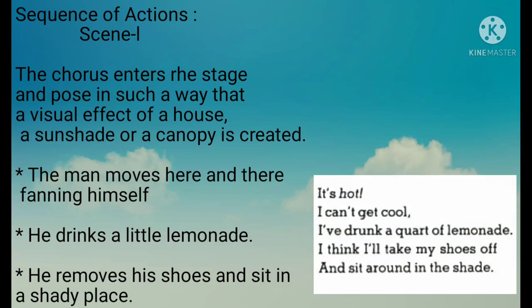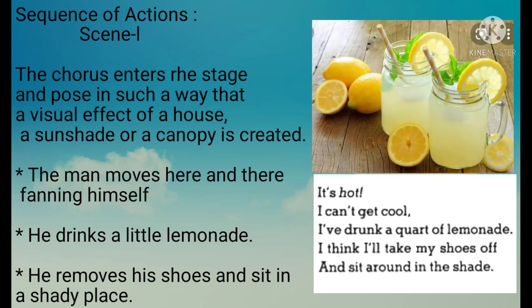For sequence of actions, let us read the first stanza: 'It's hot, I cannot get cool, I have drunk a quart of lemonade, I think I'll take my shoes off and sit around in the shade.' Now let's write Scene One: The chorus enters the stage and poses in such a way that a visual effect of a house, sunshade, or canopy is created. The man moves here and there fanning himself. He drinks a little lemonade. He removes his shoes and sits in a shady place. Write every sentence in simple present tense and use action words.